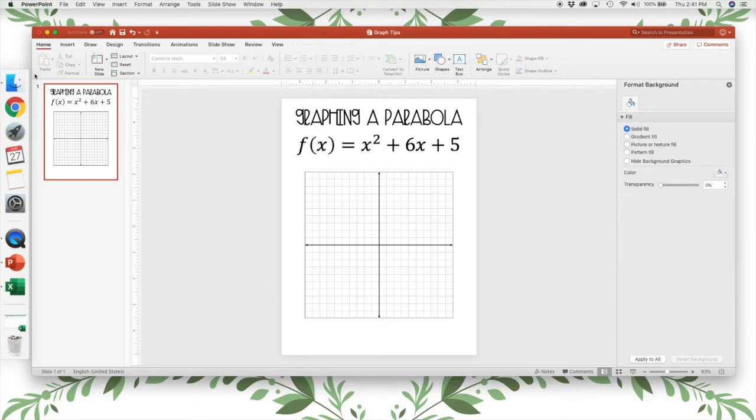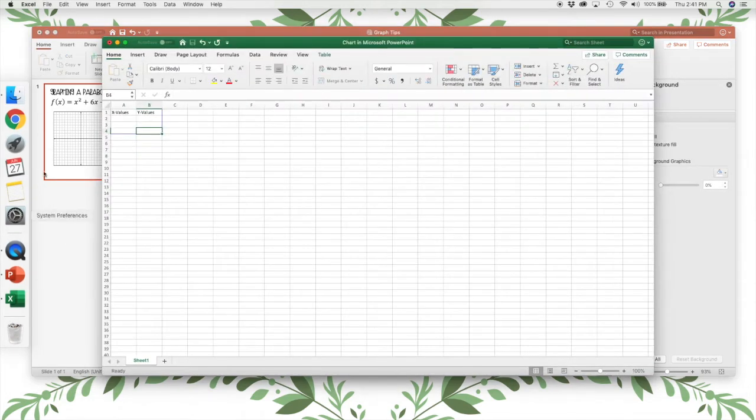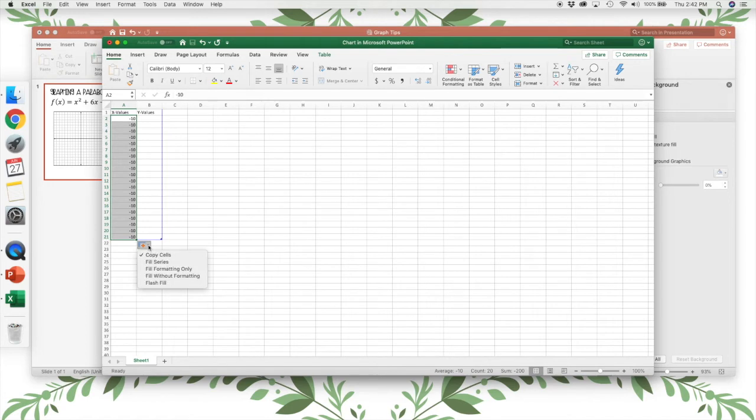So to graph a parabola, I'm going to open up my Excel spreadsheet again, and I'm going to type my X values from negative 10 to positive 10. Now you could actually type all those out if you want, but I'm going to take a shortcut. I'm going to grab the bottom right corner of the cell, and I'm going to drag it down. They'll all say negative 10 at first, but if you click here, fill series, it'll automatically fill it in ascending order for you.